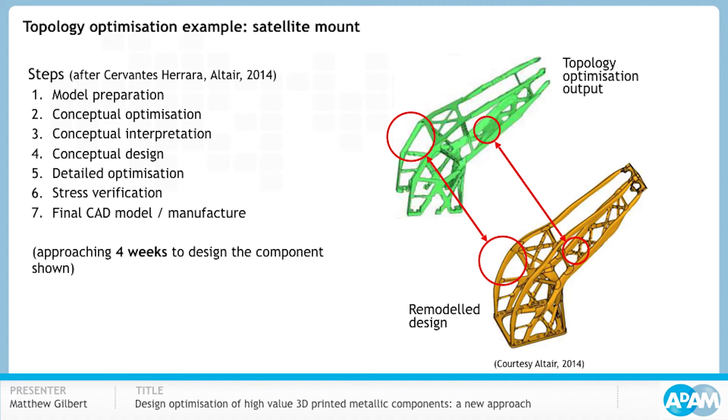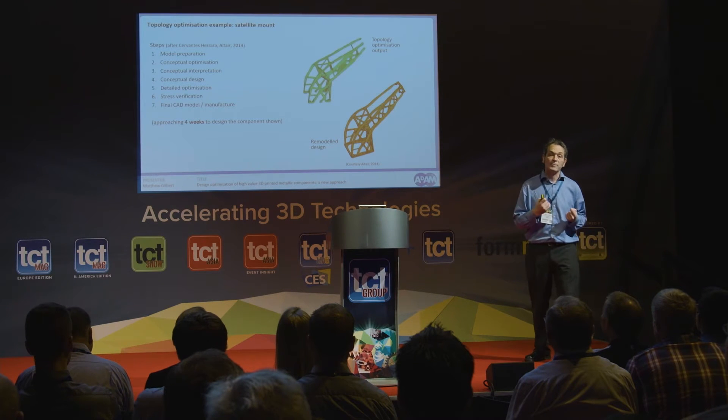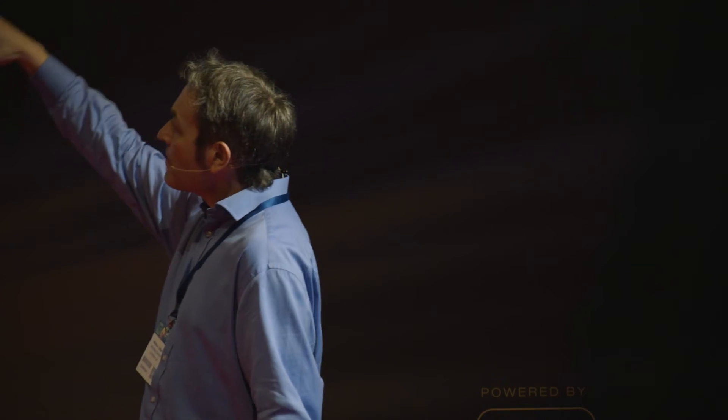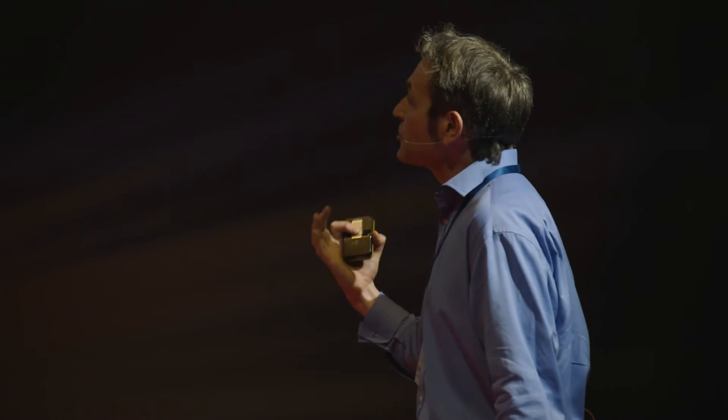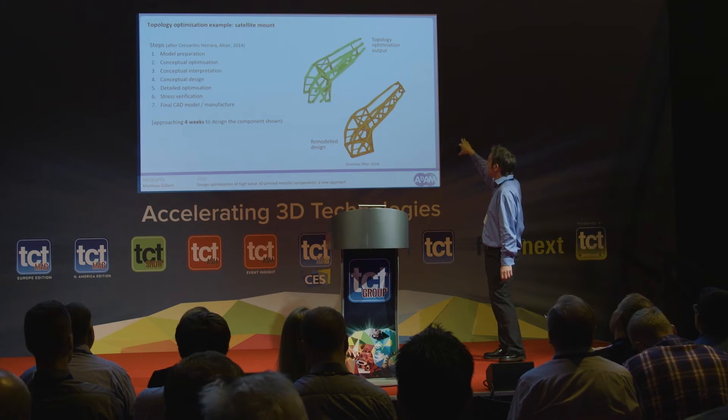Here's an example put into the public domain a couple of years ago — many positives to this satellite mount example, which used a topology optimization approach to shave off a large amount of material. However, you can see there are a number of steps and each of those steps is time-consuming. For the conceptual optimization alone there were several hundred thousand finite elements so the runtime was long, and trying the optimization with a number of different volume fractions makes the whole process lengthy — before you even come to the issue of converting your topology optimization outcome into a CAD model.